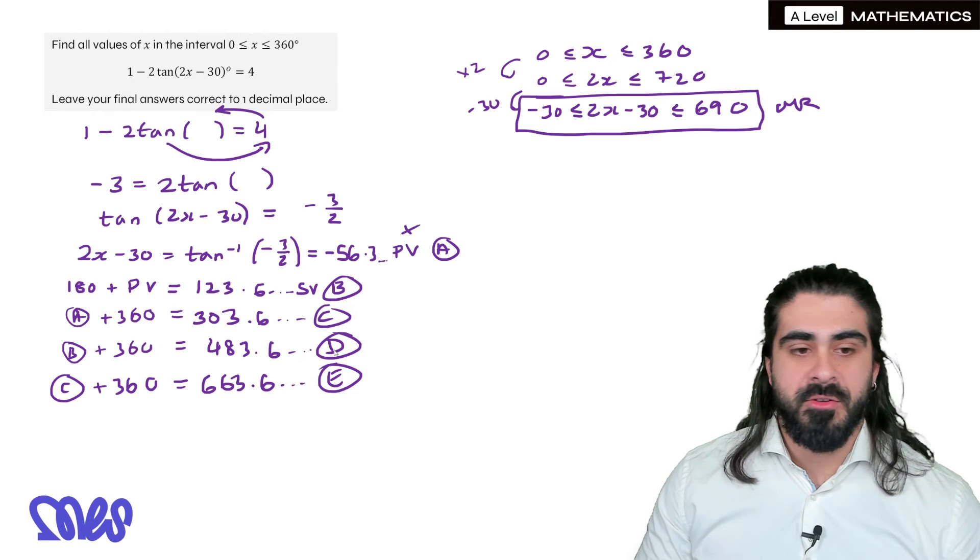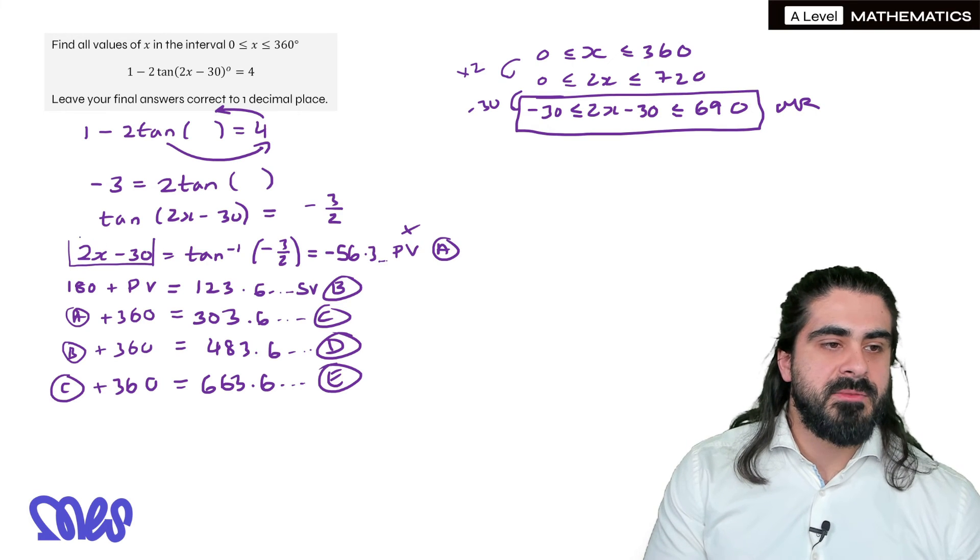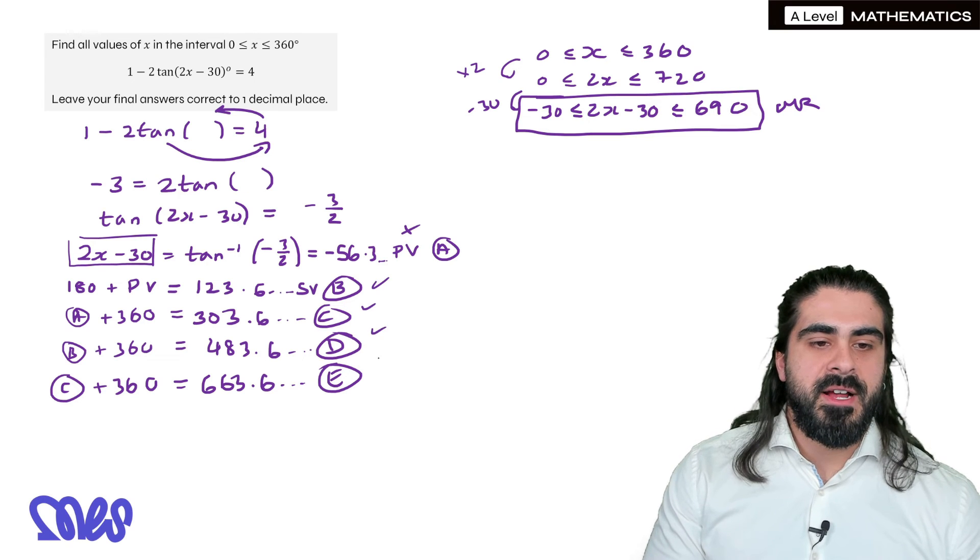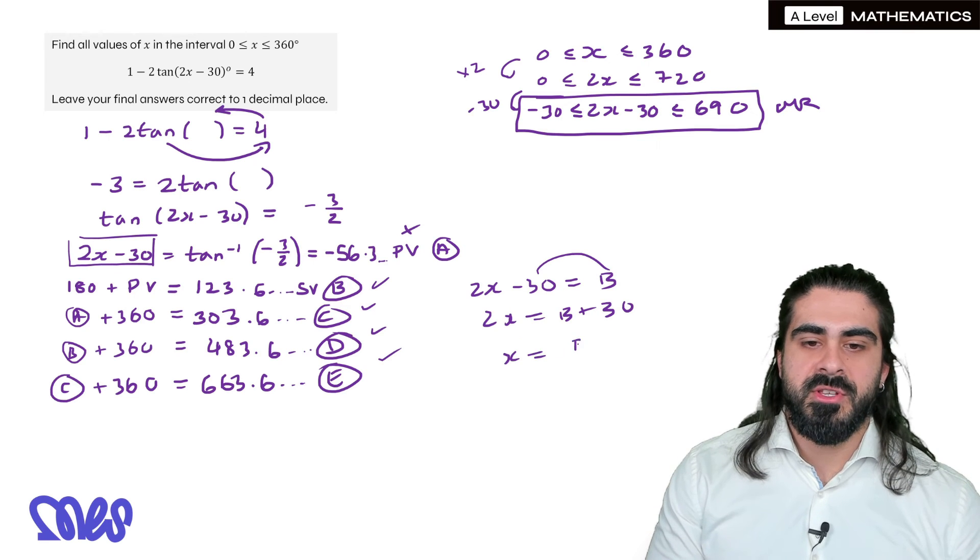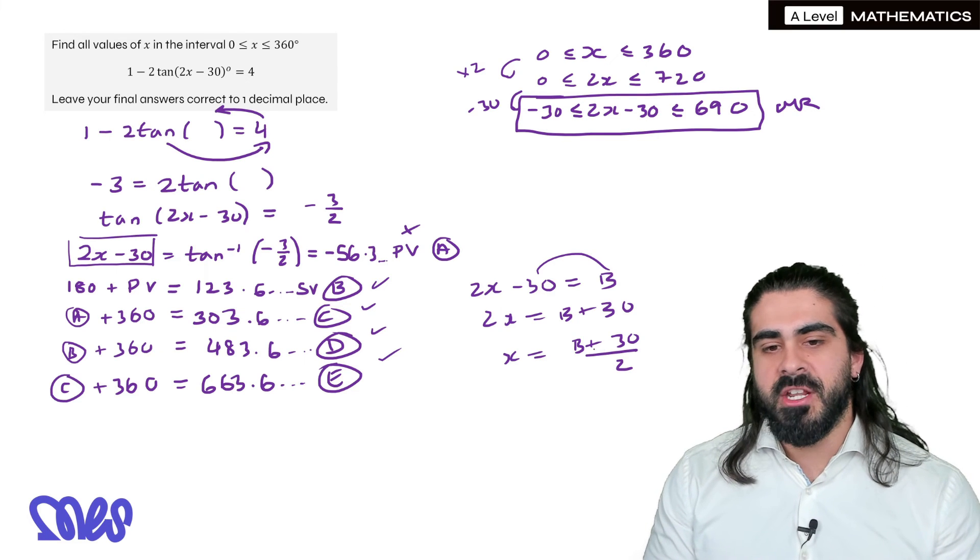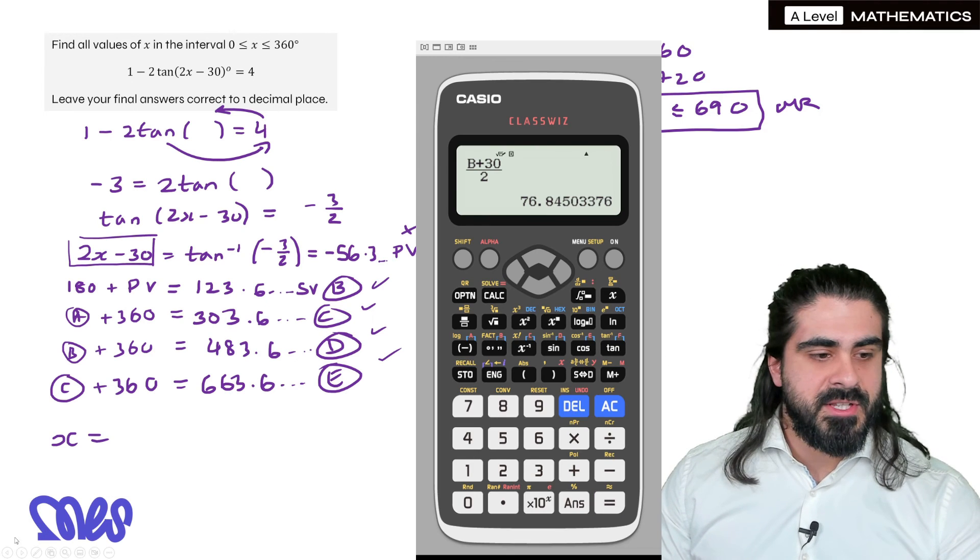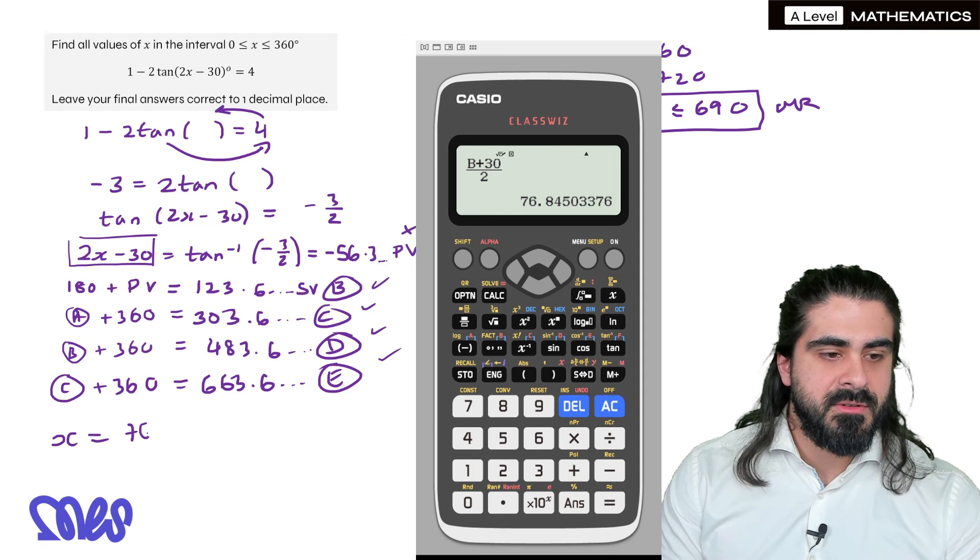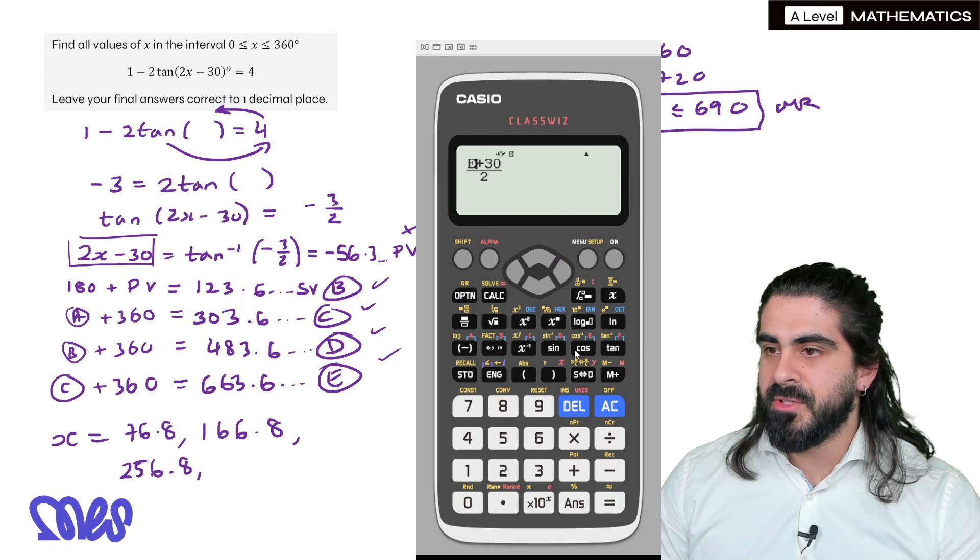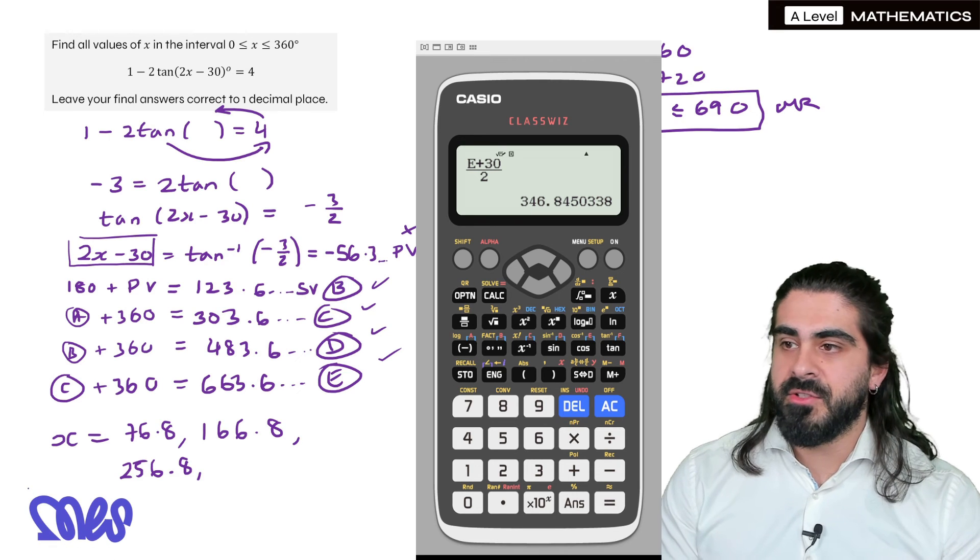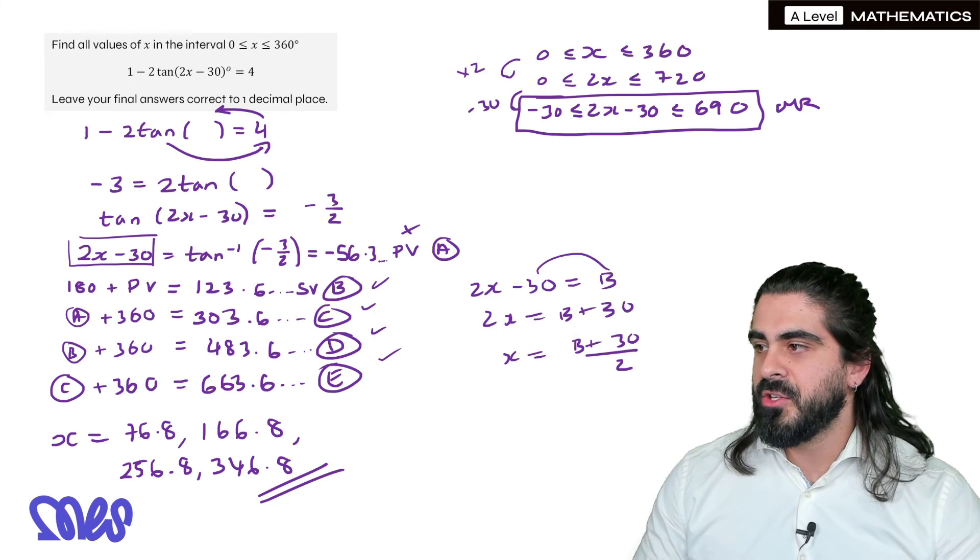Alright, now the last thing we need to do is we need to unmodify the range. I'm going to show you what we're going to do in the calculator. So, for example, remember all of these values equal 2x minus 30. So we need to unmodify all of these four values. So you have 2x minus 30 equals B. So you add 30 and then you divide by 2. So this is what I'm going to type in the calculator. And then without really changing anything, you just change B to C to D to E. So I'll show you the first one. And we're going to round it. So we've got 76.8. And now I'm going to do it for the rest. And finally, doing it for E, changing D to E, we get 346.8. And you can see these are now in the original range. So that's it.